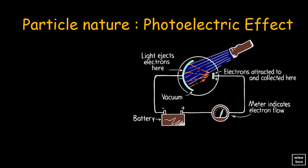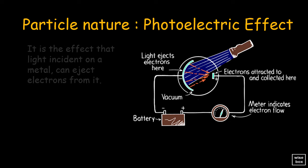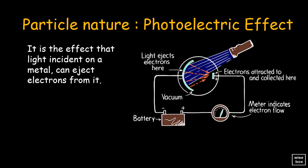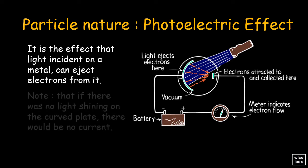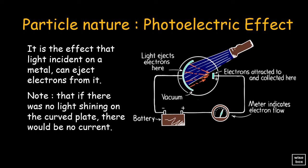This is the photoelectric effect. It is the effect that light incident on a metal can eject electrons from it. Note that if there was no light shining on the curved plate, there would be no current.